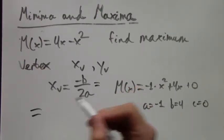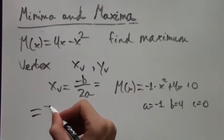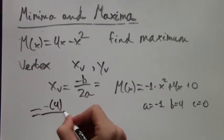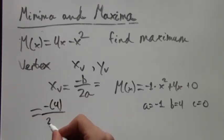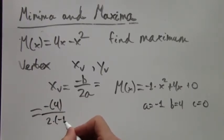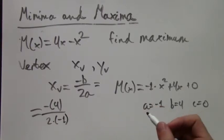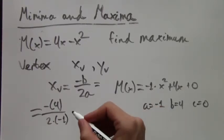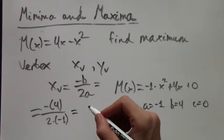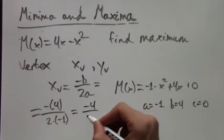So we plug into our formula and get negative b, which is 4, negative 4, over 2 times a, which is negative 1. And this simplifies to negative 4 over negative 2, which is just equal to 2.